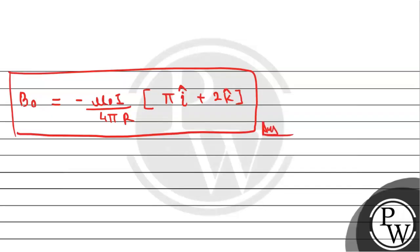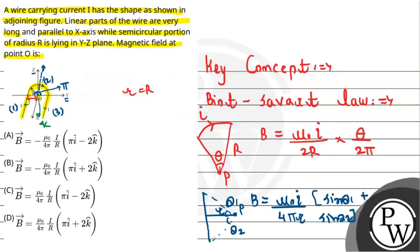As per the given options, minus mu naught I divided by 4 pi R times (pi i hat plus 2 k hat), option B is correct. This is the required solution. I hope you understand. Thank you for watching.